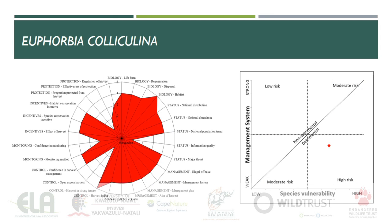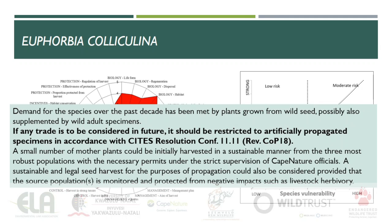The outcomes of the NDF indicate that the species is at high risk of unsustainable use, which would render the trade detrimental. Given that the demand for the species has been met by plants grown from wild seed and possibly supplemented by wild specimens, sustainability cannot be guaranteed and it is therefore recommended that trade be stopped. If any trade is to be considered in the future, it should be restricted to artificially propagated specimens. A small number of mother plants could initially be harvested and a sustainable and legal seed harvest for propagation could also be considered if source populations are continually monitored.